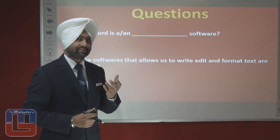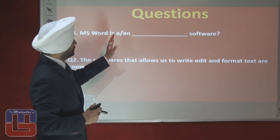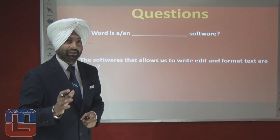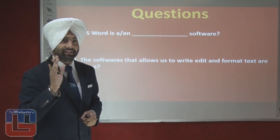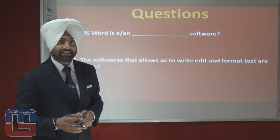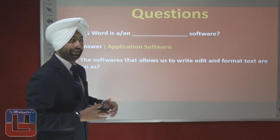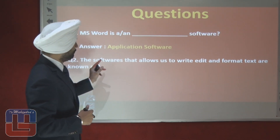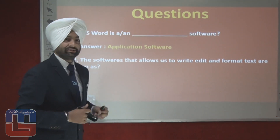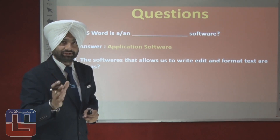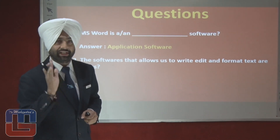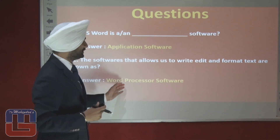Now let's go through some questions. MS Word is a blank software — what kind? Application, system, or utility? MS Word is an application software. Next: the softwares that allow us to write, edit, and format text are known as — spreadsheet software? No. They are known as Word Processor Software.